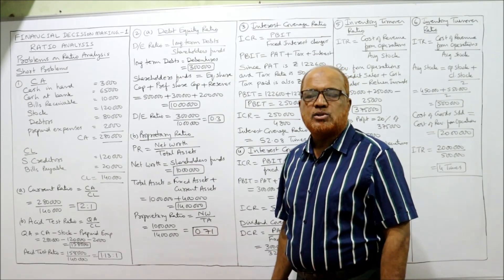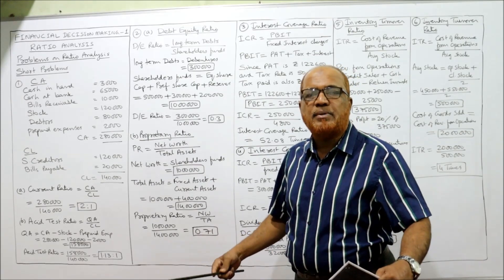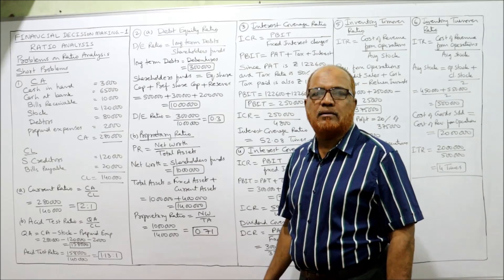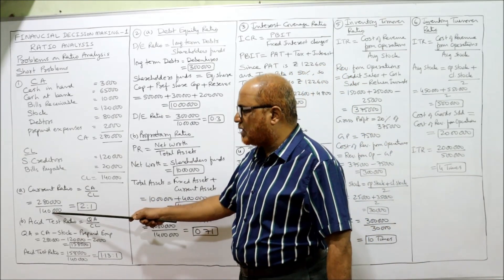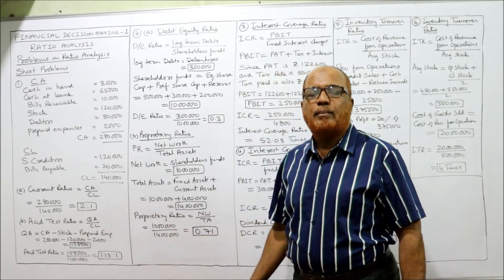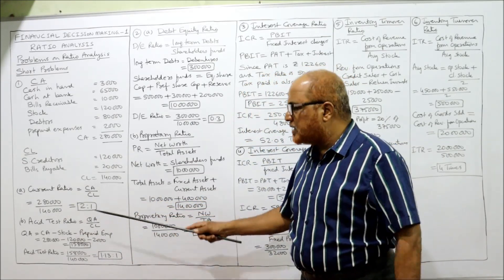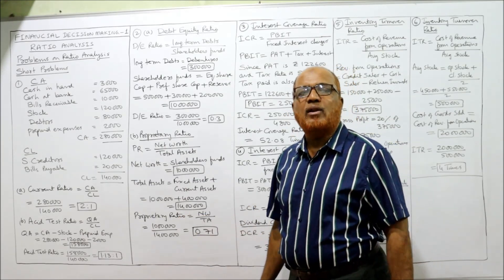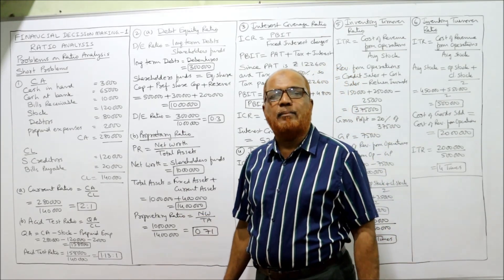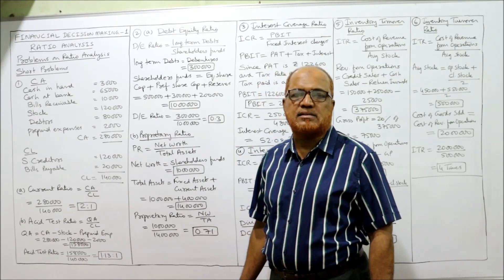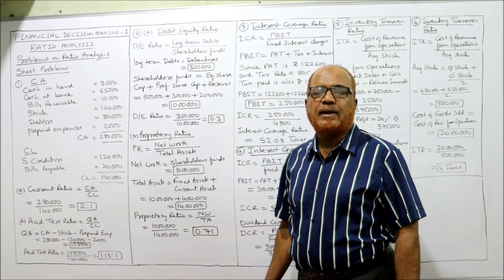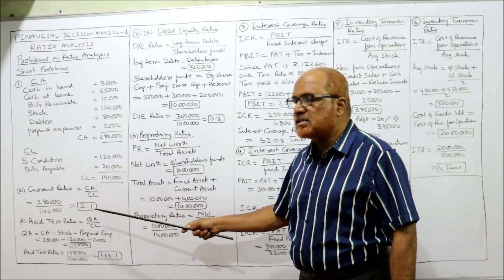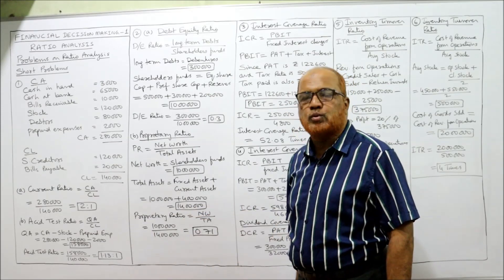So we write it down as 2 is to 1, indicating that for every one rupee of current liability, we have two rupees of current assets. That means the current assets are double the current liabilities — that is the meaning of 2:1.